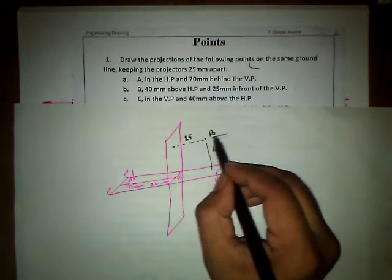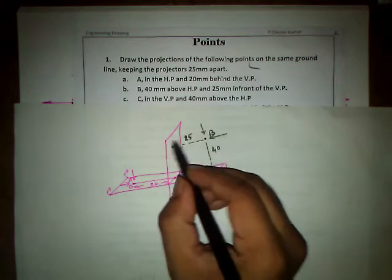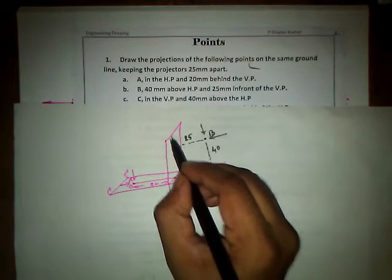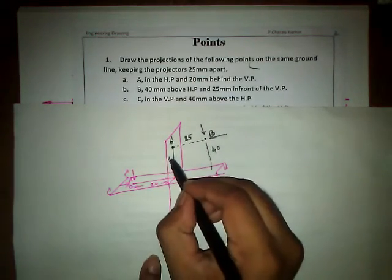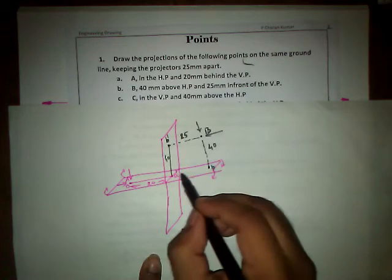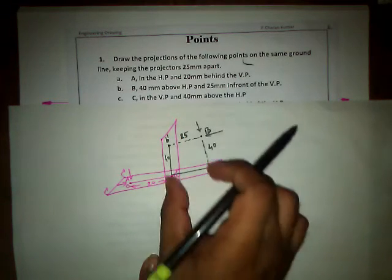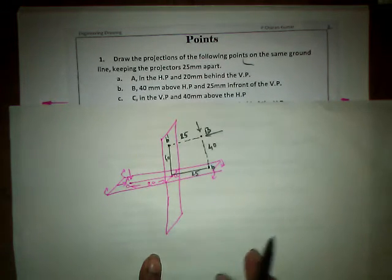So if I see the front view in this way and top view in this manner, the front view is going to be projected on vertical plane, it is B', and this distance is going to be the opposite distance, that is 40mm. And top view is going to be projected on horizontal plane B, and this distance is going to be 25mm. So this is how we have it.